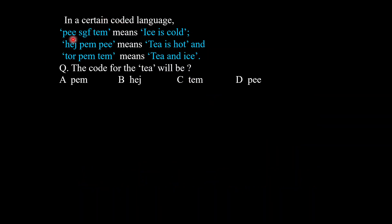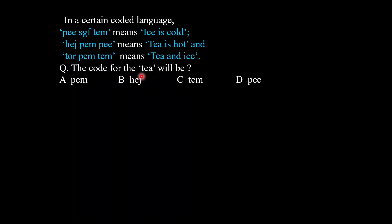In a certain coded language: 'pwe sgf tem' means 'ice is cold'; 'h e j p e m p double e' means 'T is hot'; and 't o r p e m t e m' means 'T and ice'. So the code for the word T — we have to find out the code for the word T.